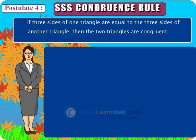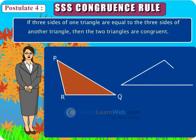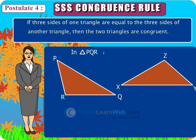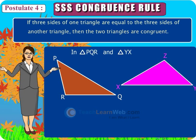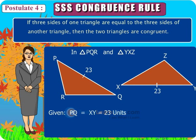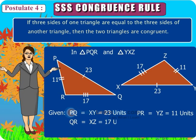Example. Children, observe the following two triangles: triangle PQR and triangle YXZ. Given: PQ is equal to XY is equal to 23 units, PR is equal to YZ is equal to 11 units, and QR is equal to XZ is equal to 17 units.